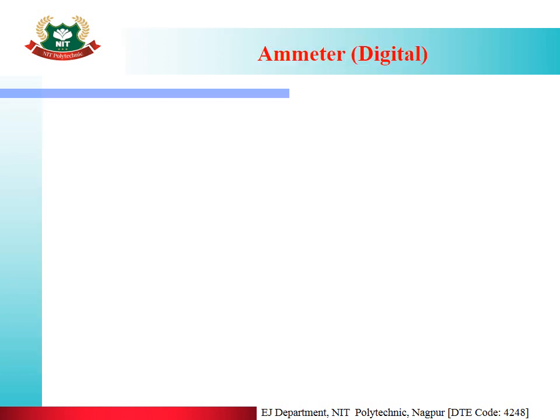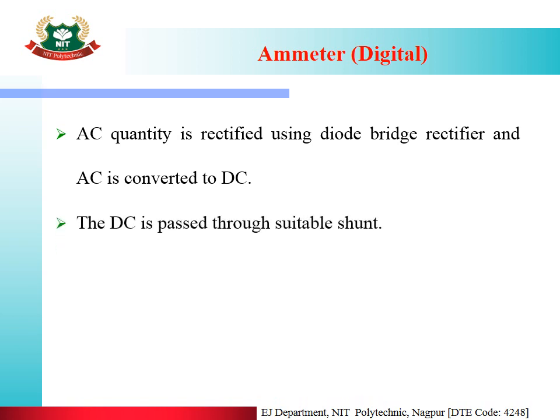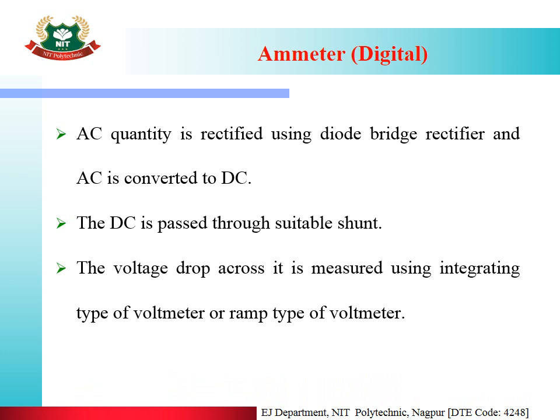Regarding the ammeter — digital ammeter: AC quantity is rectified using a diode bridge rectifier, and AC is converted to DC. The DC is then passed through a suitable shunt. The voltage drop across it is measured using an integrating type of voltmeter or ramp type of voltmeter.